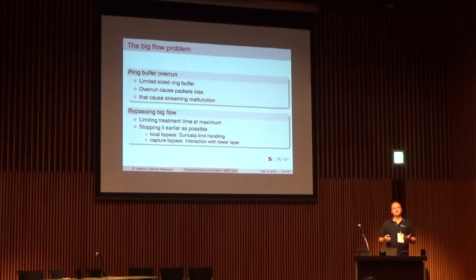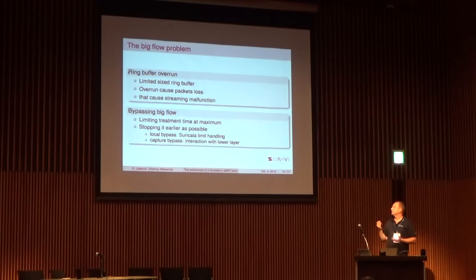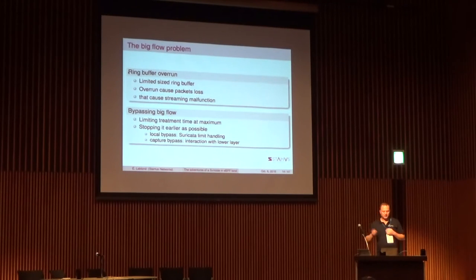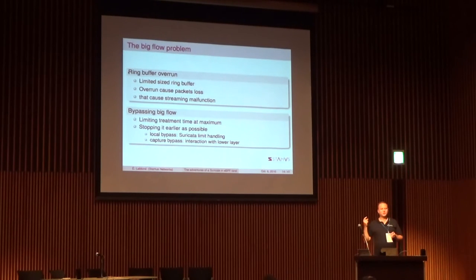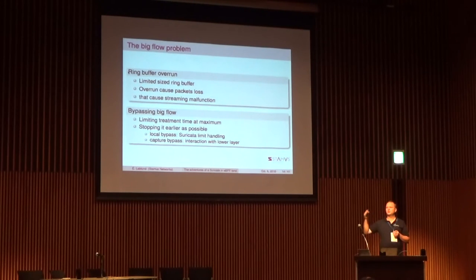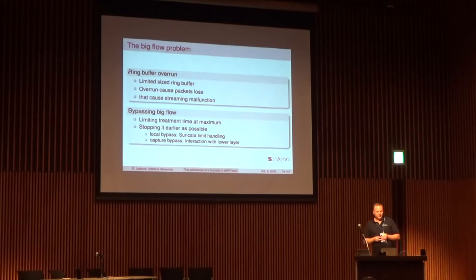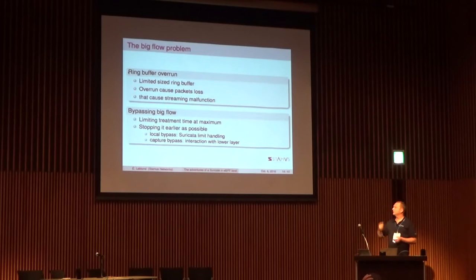If we manage to bypass big flows, we will really manage to get our accuracy far higher. I started working on this from a previous NetDev, and it has just been merged with some improvements. We now have a local bypass, done by Suricata, which is able to say: I've already seen too much of this flow, I just want to stop processing it — it's like a drop at Suricata's side. Then we also have capture bypass, where we work with the lower layer to tell it we don't want to see any more packets from the flow.